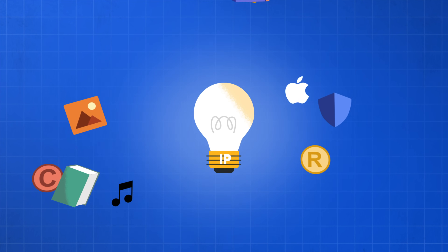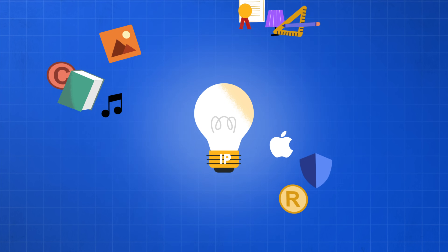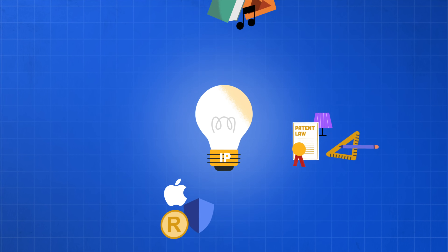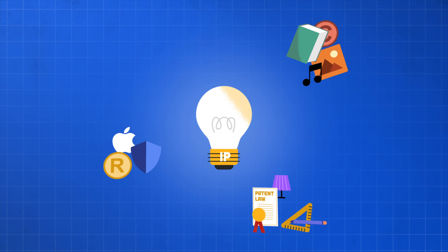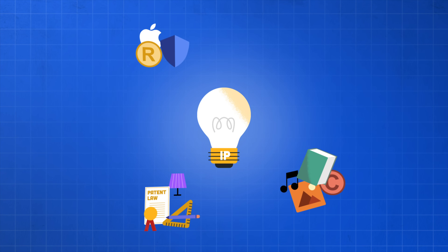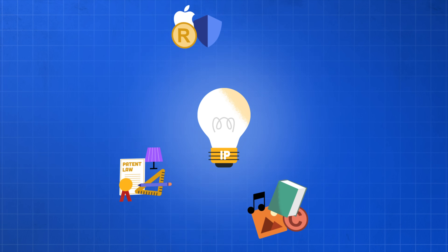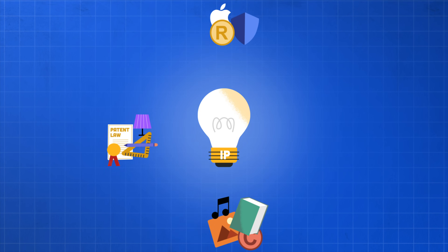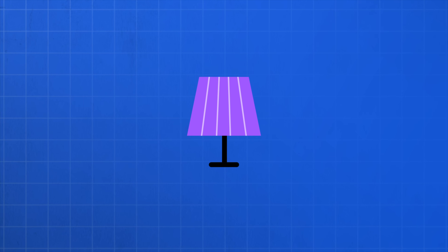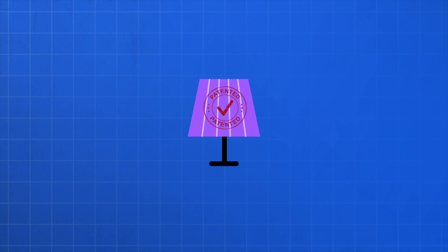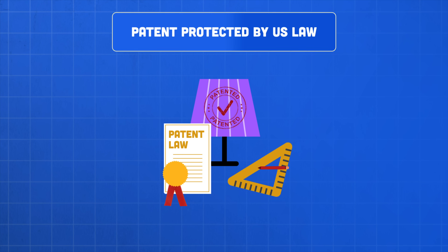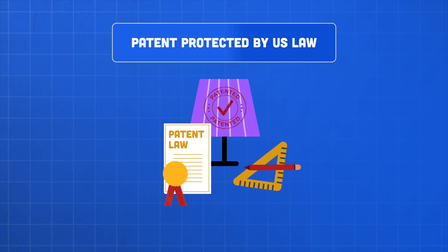Intellectual property is, broadly speaking, a category that in U.S. federal law embraces a couple of different major categories of areas that can be protected. We protect inventions that inventors come up with — basically new technologies. That's the domain of patent law.